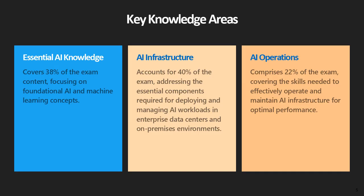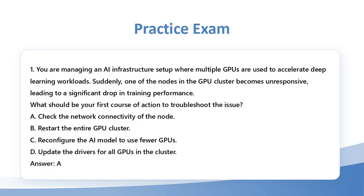Key Knowledge Areas. Question 1: You are managing an AI infrastructure setup where multiple GPUs are used to accelerate deep learning workloads. Suddenly, one of the nodes in the GPU cluster becomes unresponsive, leading to a significant drop in training performance. What should be your first course of action to troubleshoot the issue? A. Check the network connectivity of the node. B. Restart the entire GPU cluster. C. Reconfigure the AI model to use fewer GPUs. D. Update the drivers for all GPUs in the cluster. Answer: A.